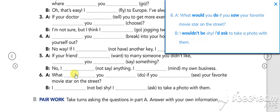And number six: what would you do if you saw your favorite movie star on the street? B: I wouldn't be shy. I'd ask to take a photo with them.